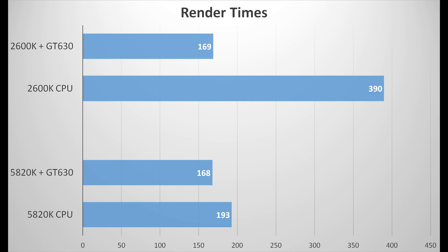Taking a look here, it's obviously no surprise that when we add the GPU we get better rendering times, especially on my older system which is the 2600K. Using the CPU only, we can see that the 5820K does a lot better than the 2600K, shaving off like half the render time. But even with the 5820K, when we add CUDA acceleration we're able to shave off more time — and in fact the 5820K with CUDA takes the same amount of time as the 2600K with CUDA. So I think the takeaway from this is just how important the GPU is in rendering.